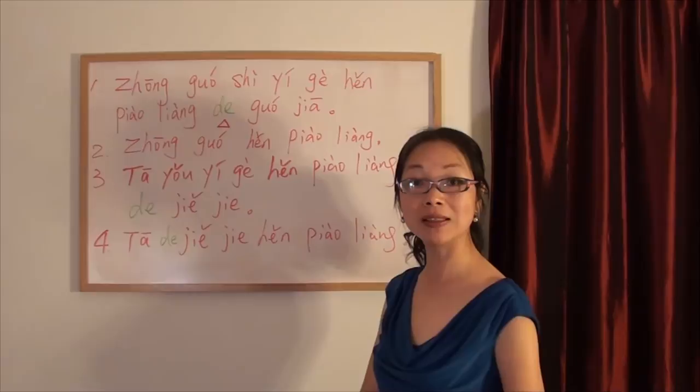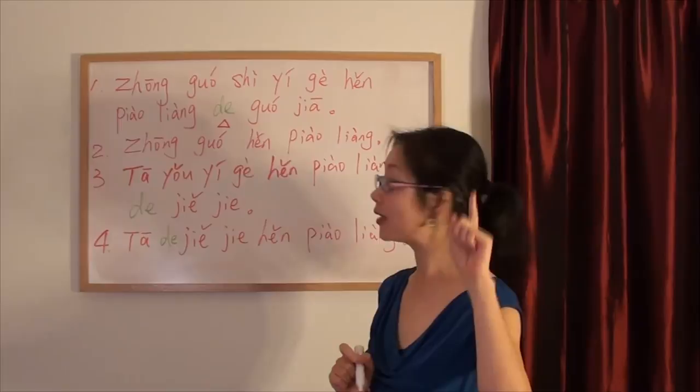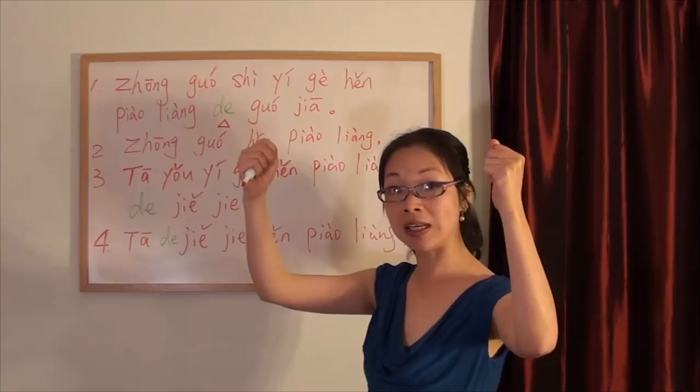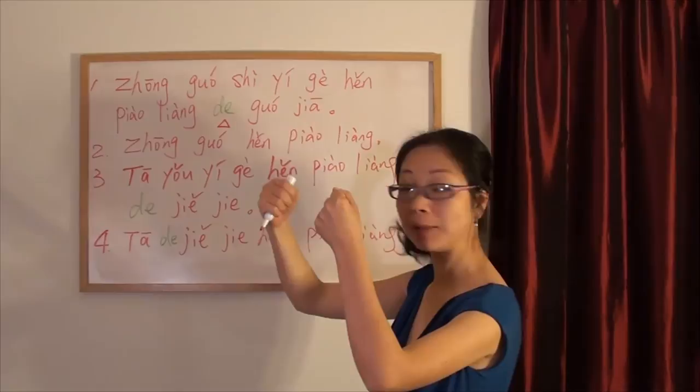De has two functions. First function is possession. Second function is to connect the adjective and noun. Remember, in Chinese, you cannot put the adjective and noun together directly. They have to be connected by de.